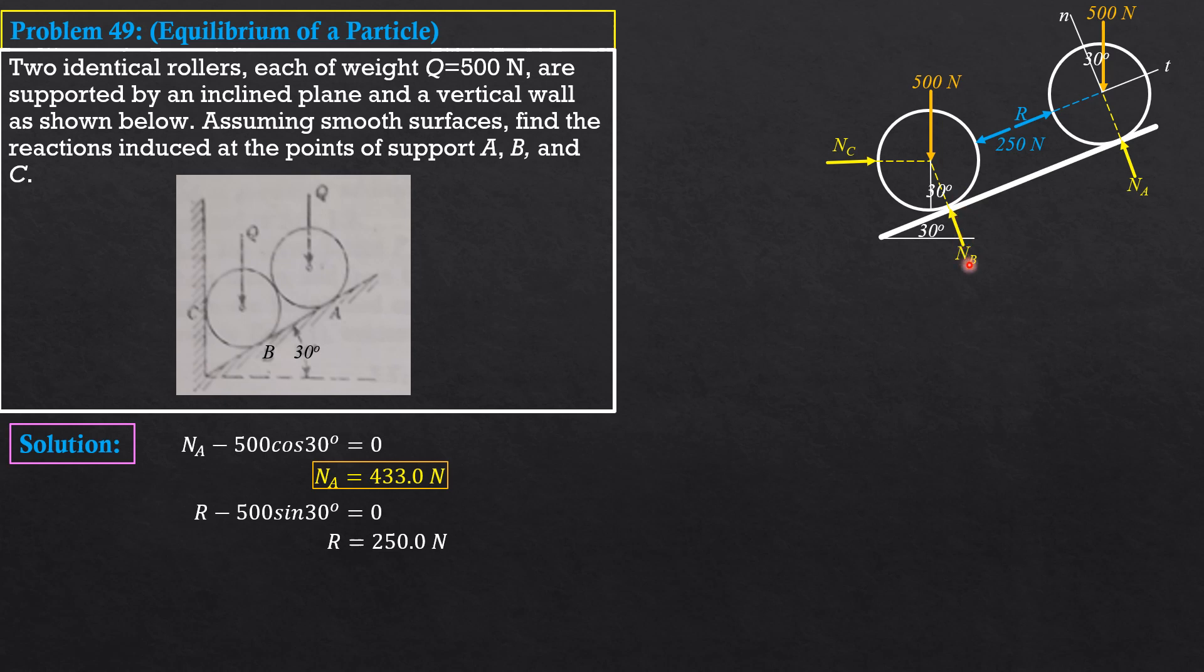So, first, to solve for NB, we sum up forces vertical equals 0. So, NB cosine 30, that's also 30. NB cosine 30 degrees minus 500 minus vertical component of 250. So, minus 250 sine 30 equals 0. So, we can now solve NB. NB is equal to 721.7 newtons.